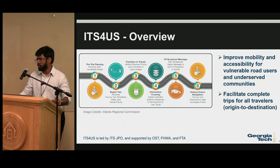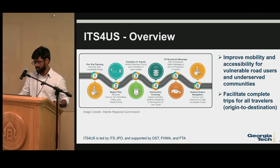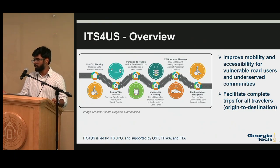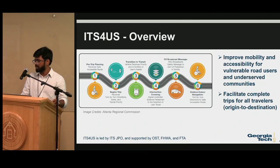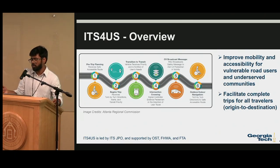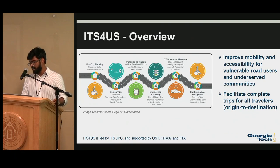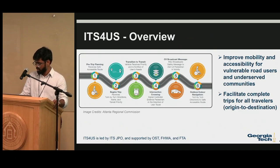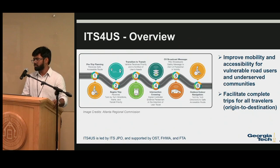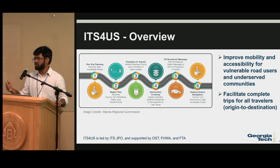Considering all these issues, the ITS4US project is an Intelligent Transportation Systems Joint Program Office initiative supported by both the Federal Highway Administration and the Federal Transit Agency. The main goal of this program is to improve mobility and accessibility for vulnerable populations and underserved communities, with a key focus on facilitating complete trips — specifically first and last mile connectivity to bus stops and transit centers.